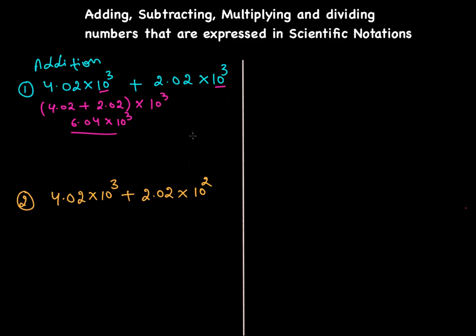Now look at the second problem — same setup but the second number has 10². The powers are different, so we need to make them equal. We're going to change 2.02 × 10² to have 10³. To do that, we multiply by 10 but also divide by 10 so the overall value stays the same.